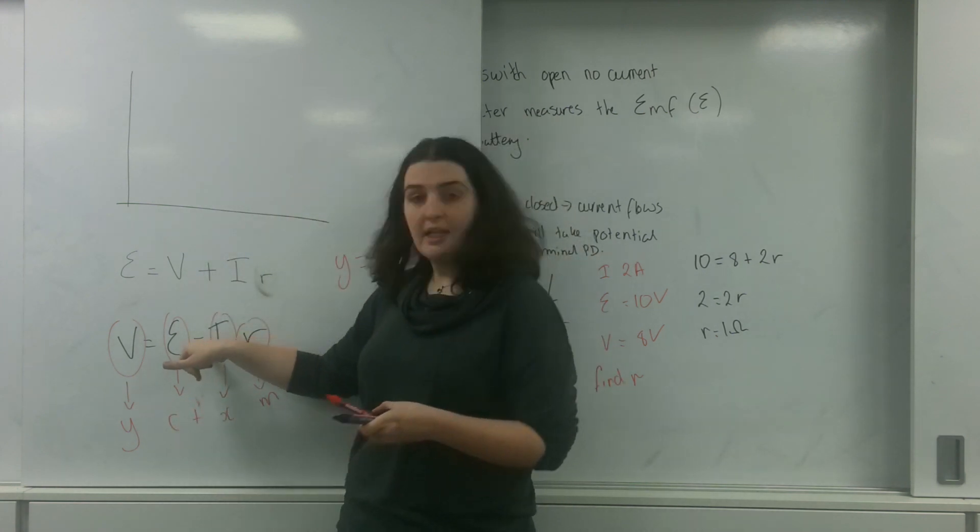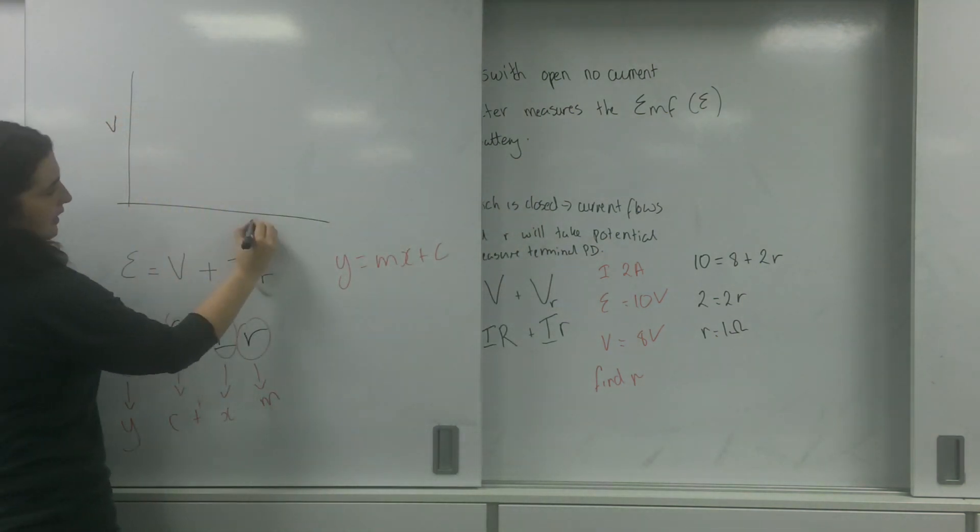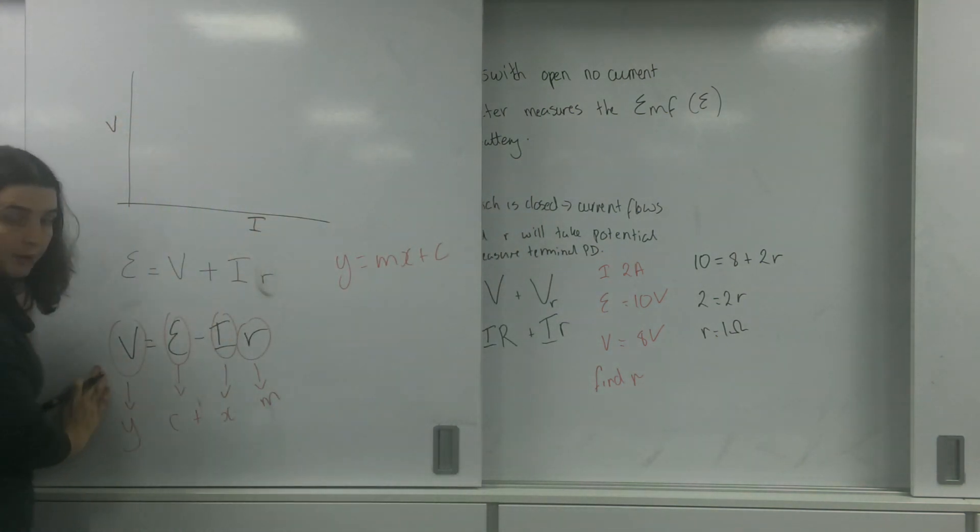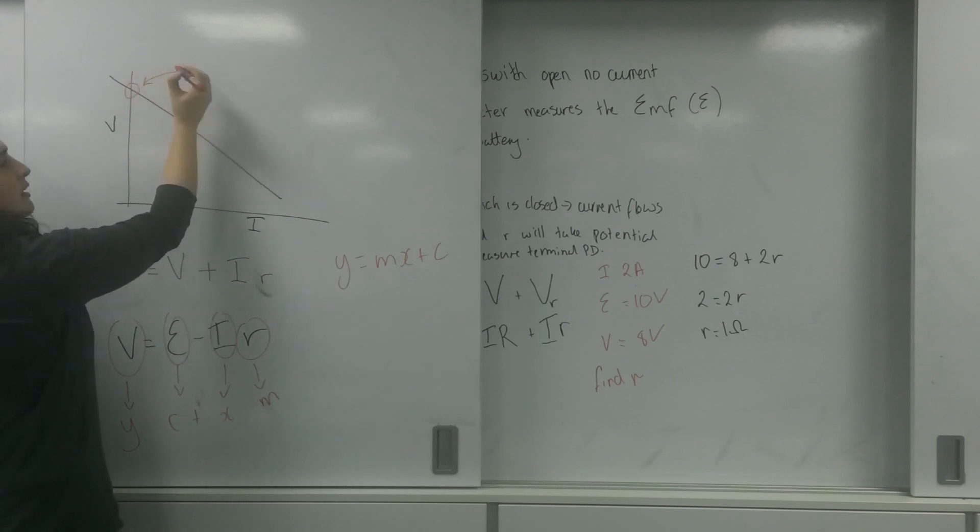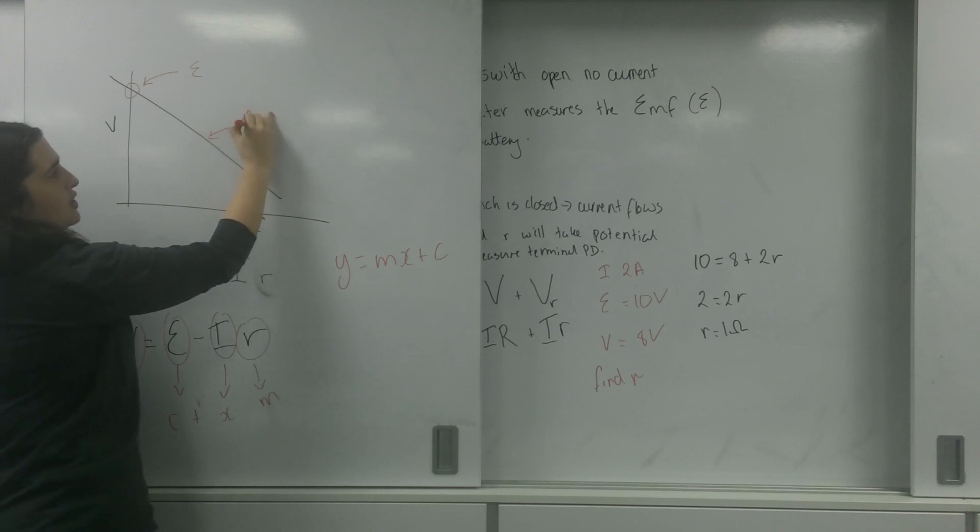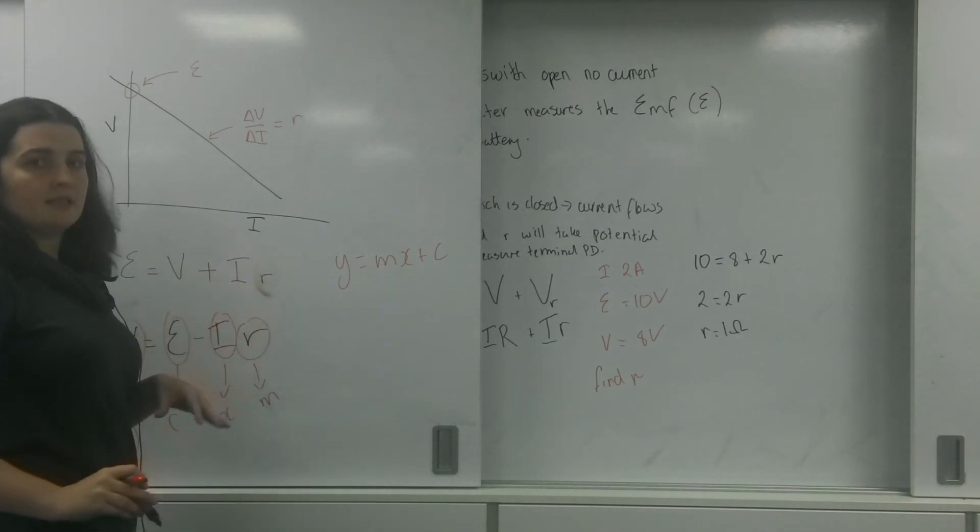I would get a graph like that where my intercept here would be my EMF and the change in V over change in I would be my little resistance, my internal resistance.